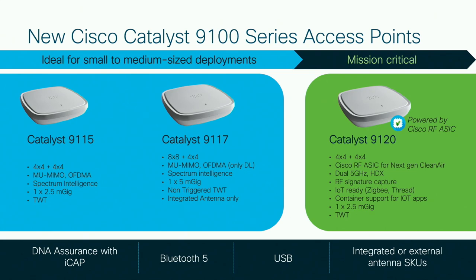These access points also have support for IoT readiness — for IoT radios like Zigbee and Thread. In the future, these access points will support containers to host IoT gateways. For example, you'll be able to run a Docker container and run applications on it.